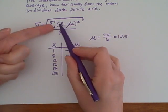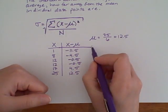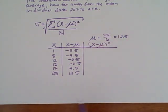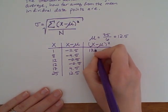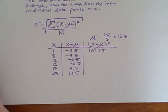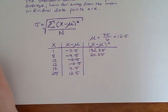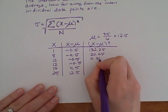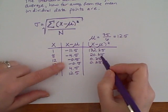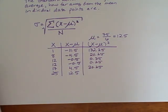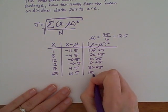Then according to the formula, the next thing we do, we start in the parentheses, then we do the exponent. So now we're going to take all of these deviations and square them. So if I take negative 11.5 squared, I get 132.25. If I take negative 4.5 and square it, we get 20.25. A half squared is 0.25. 4.5 squared would be the same as negative 4.5 squared, which is the 20.25, and then 12.5 squared we get 156.25.